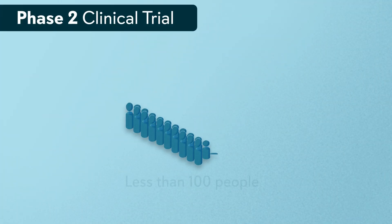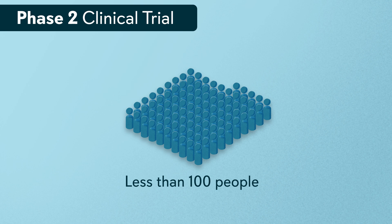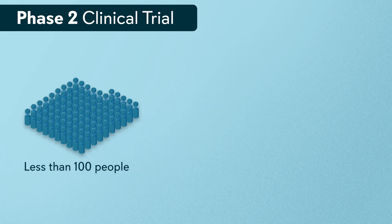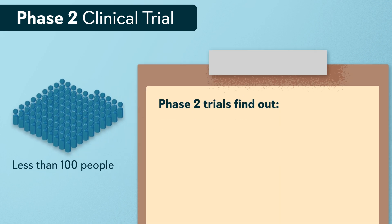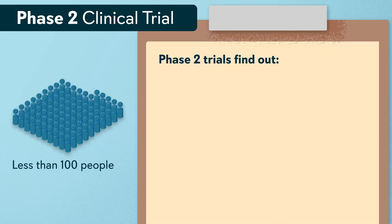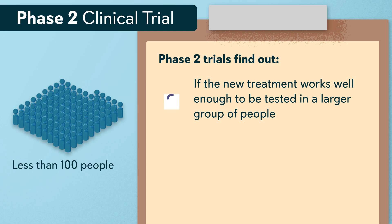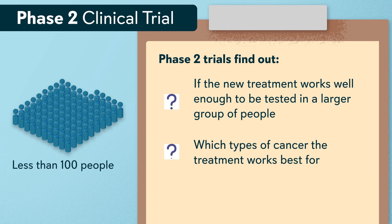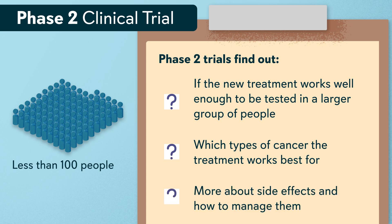Phase two trials usually involve less than 100 people. The aim of a phase two trial is to find out if the new treatment works well enough to be tested in a larger group of people, which types of cancer the treatment works best for, and more about side effects and how to manage them.